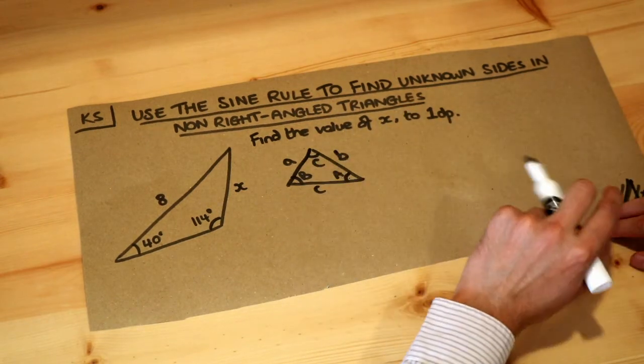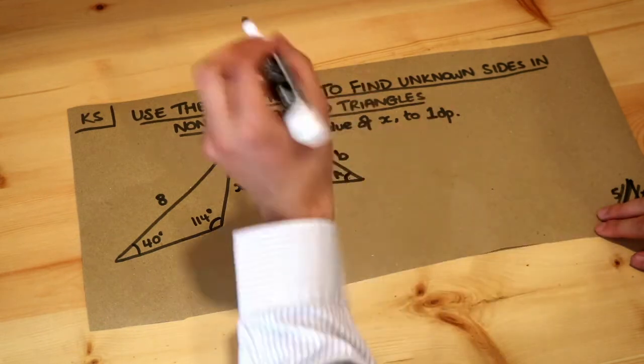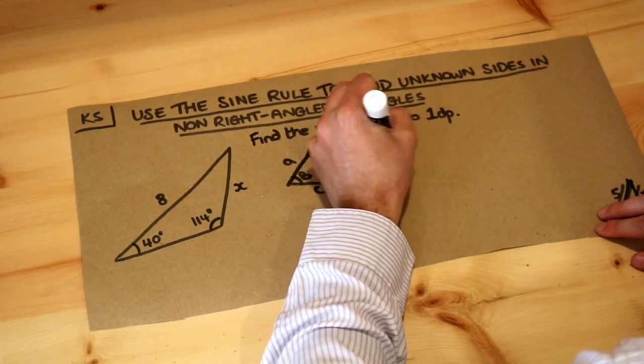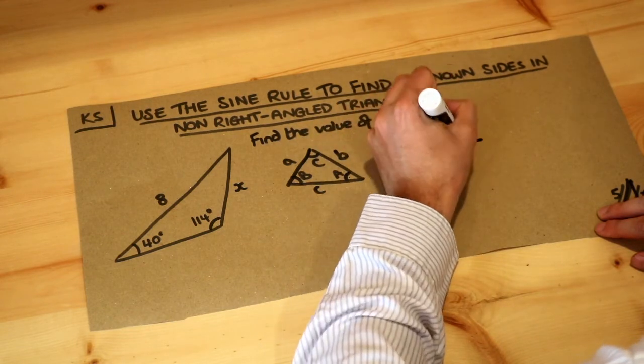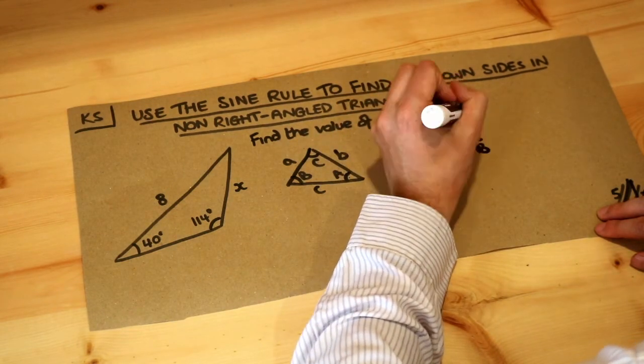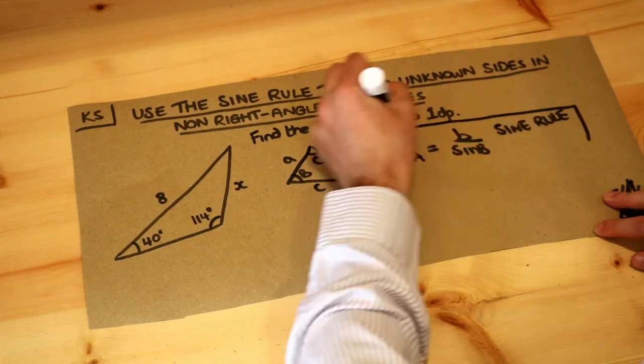Now if you've got a non-right-angled triangle, this is what the sine rule is and I'll explain how to use it. A over sine A is equal to B over sine of capital B. This is the sine rule.